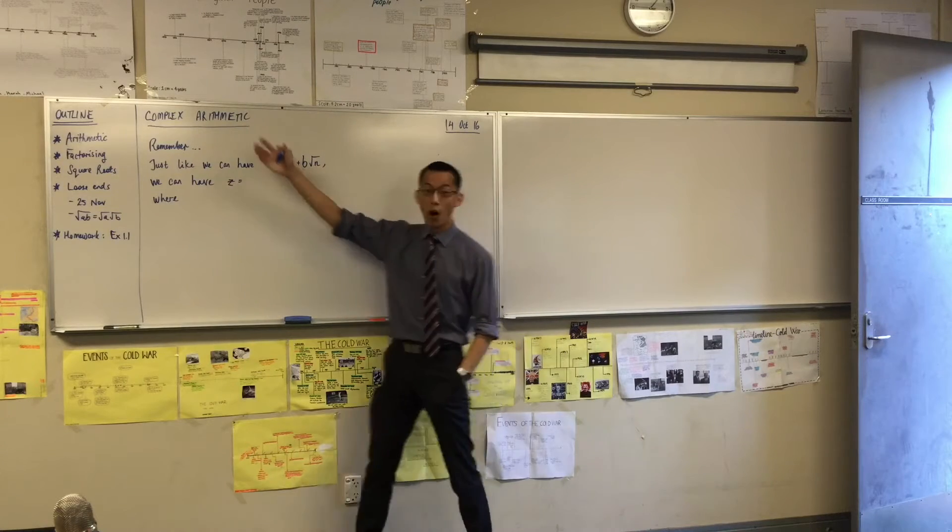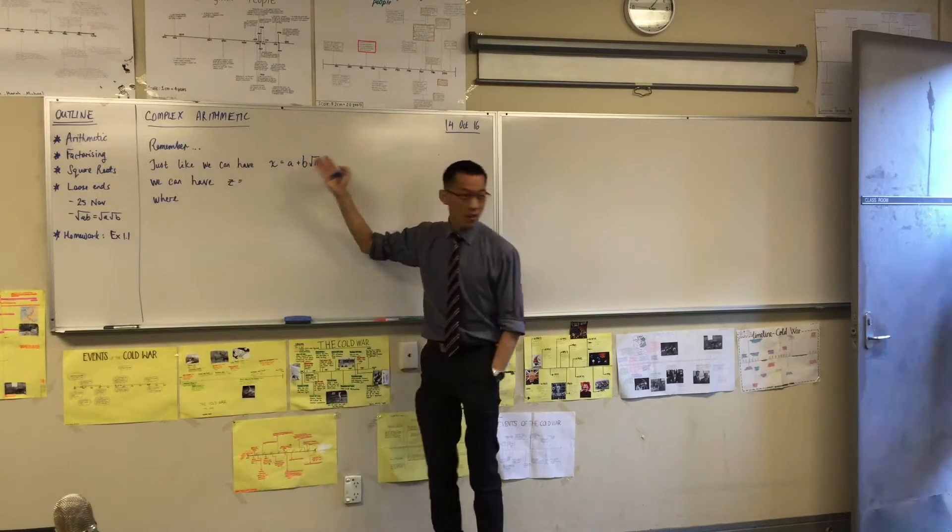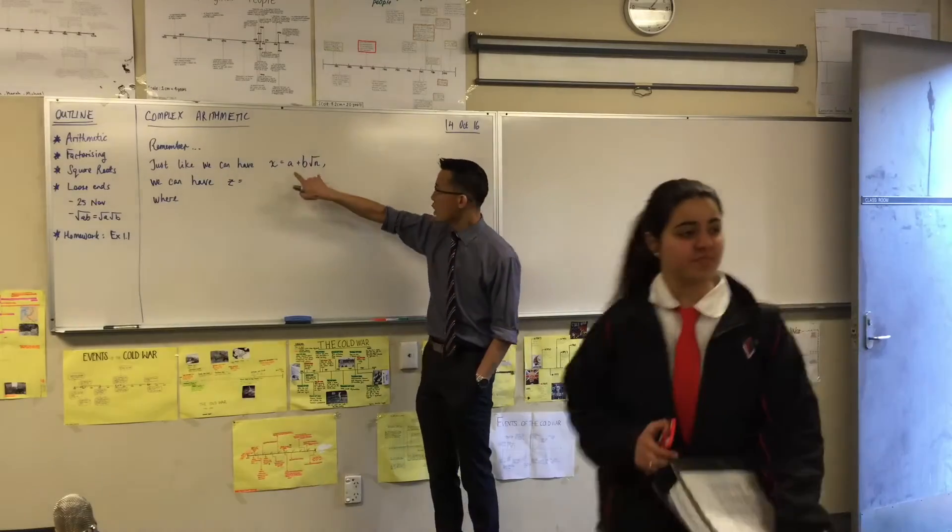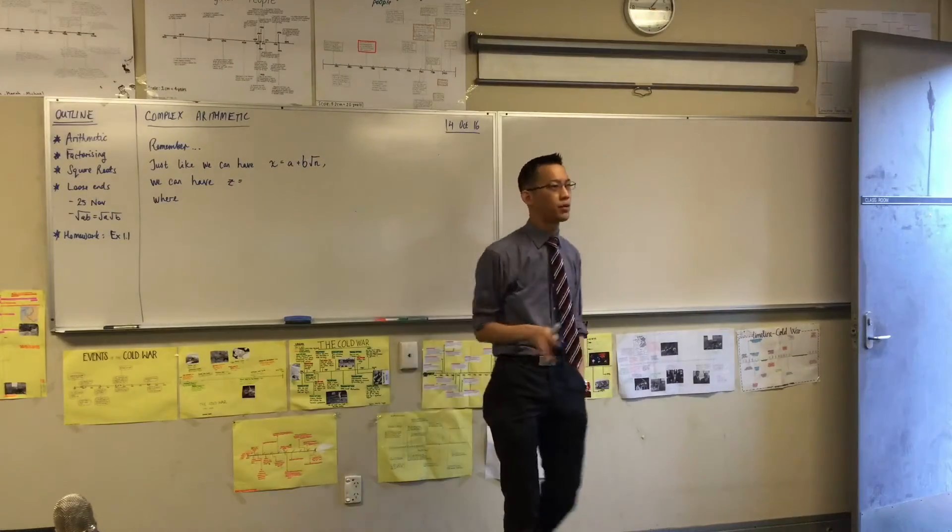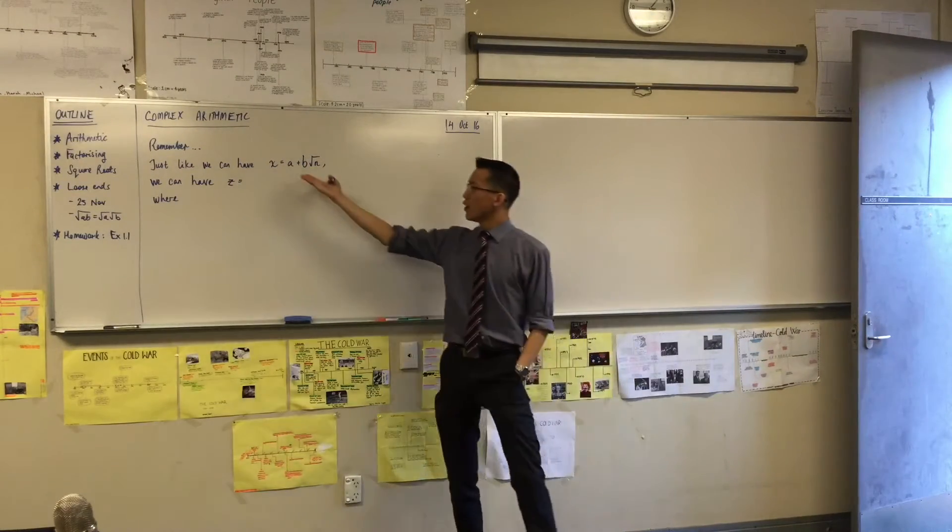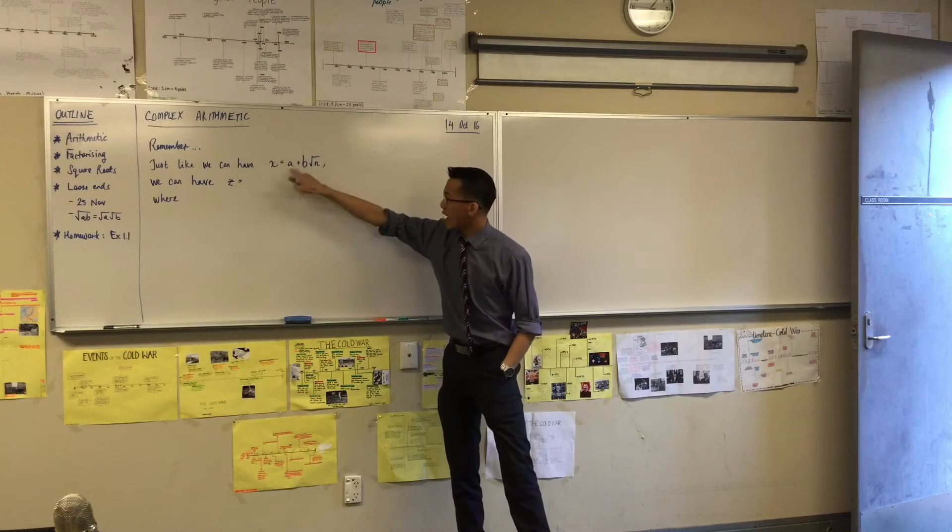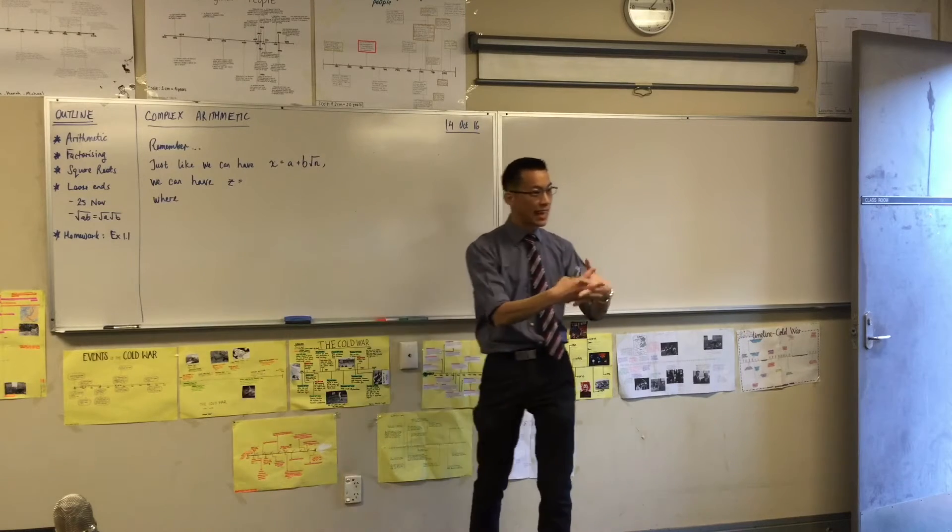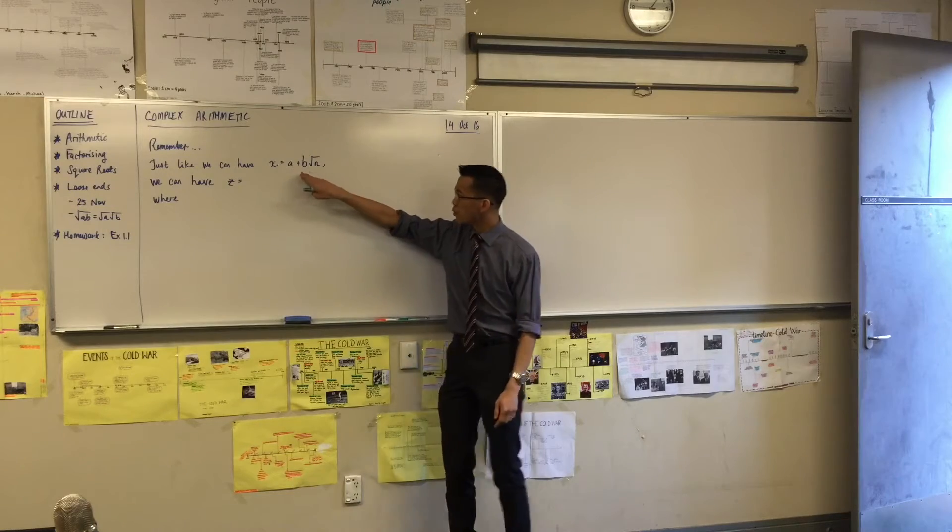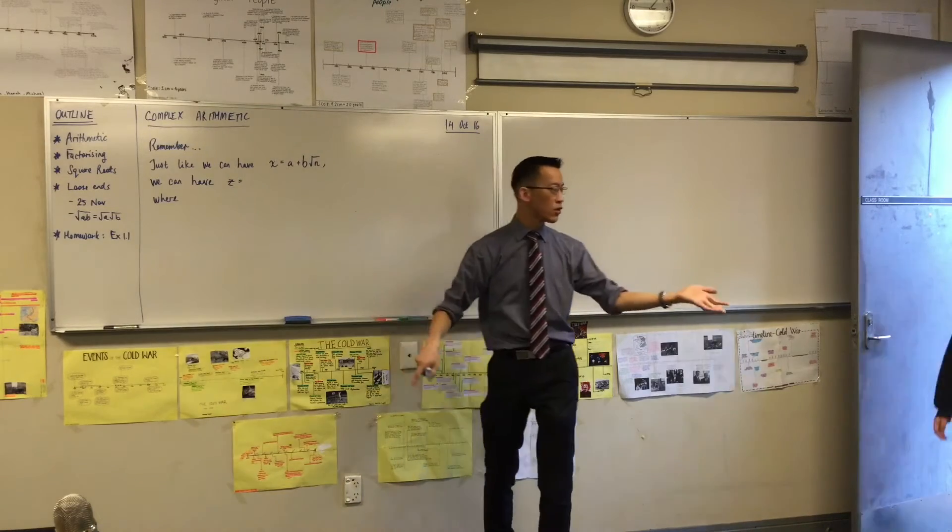I want to draw this parallel between complex numbers and irrational numbers. We saw with irrational numbers, we're good at working with irrational numbers, right? So we know we can combine a rational number and an irrational number together. Some number over here, some multiple of the square root of anything you'd like.